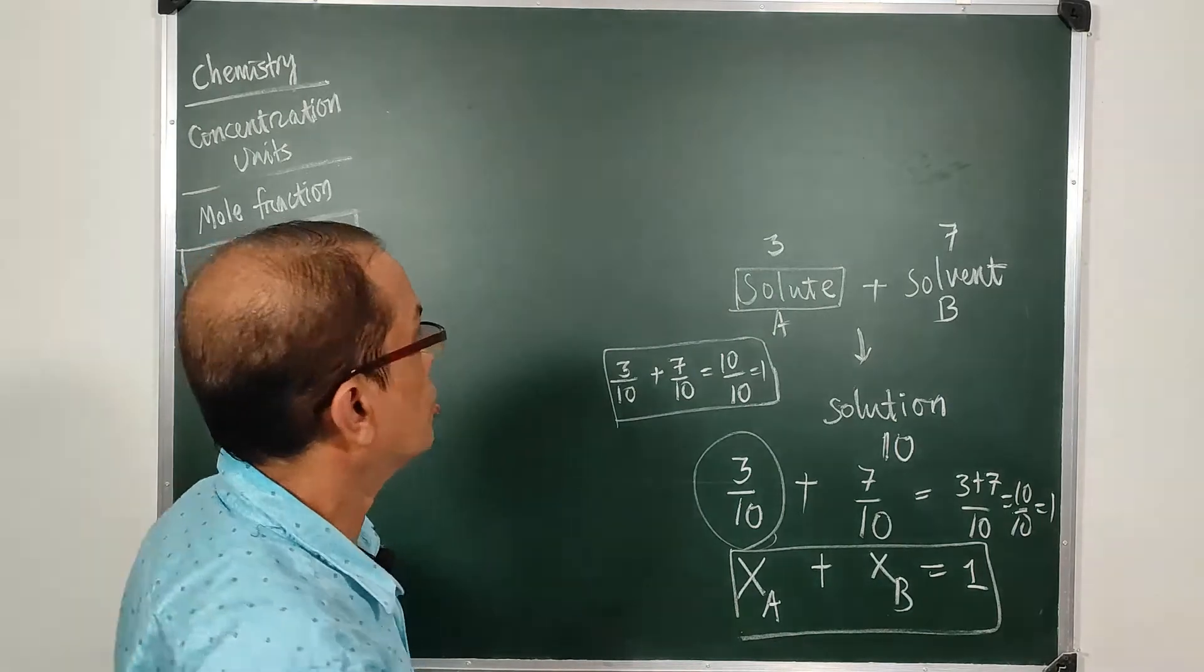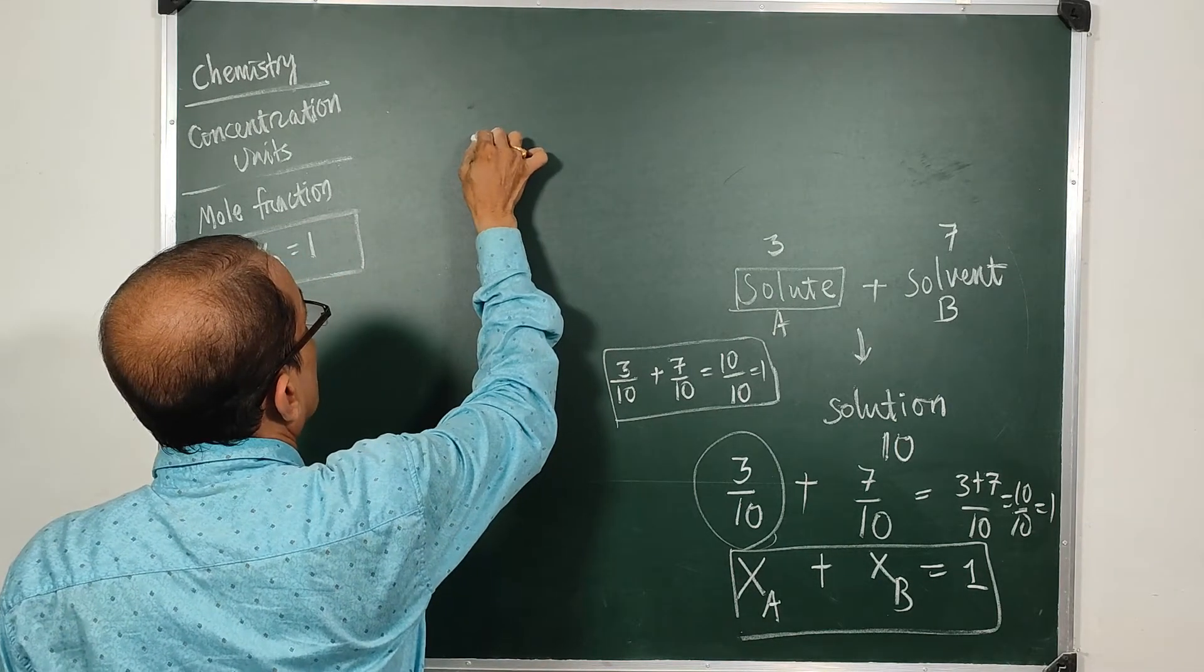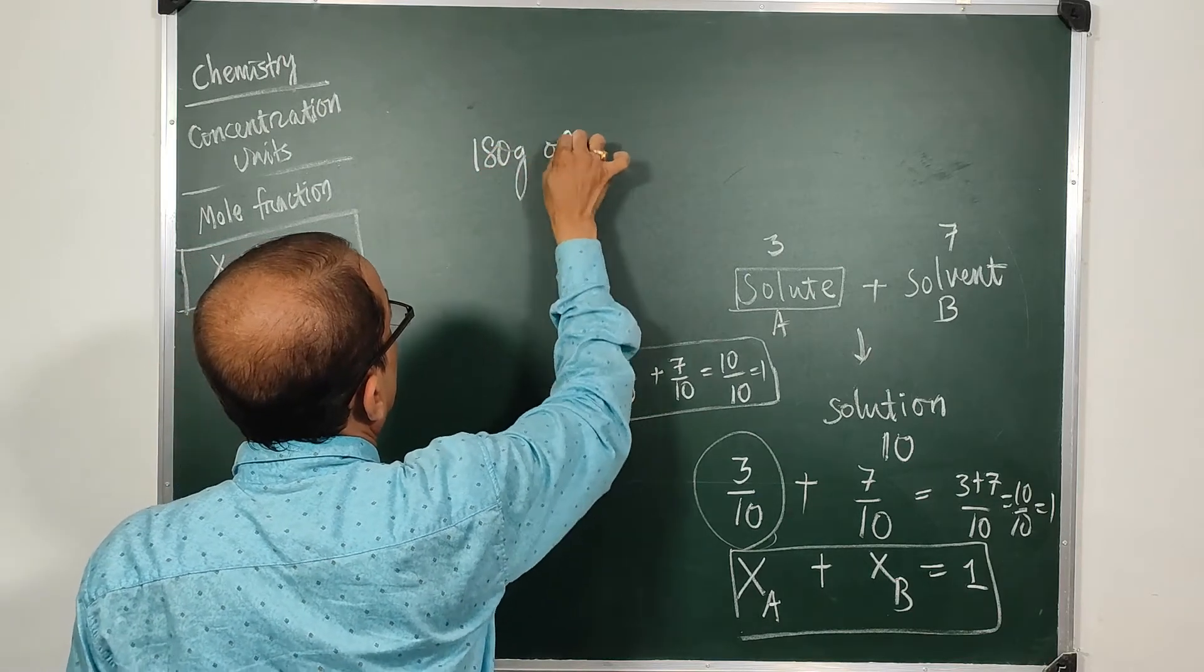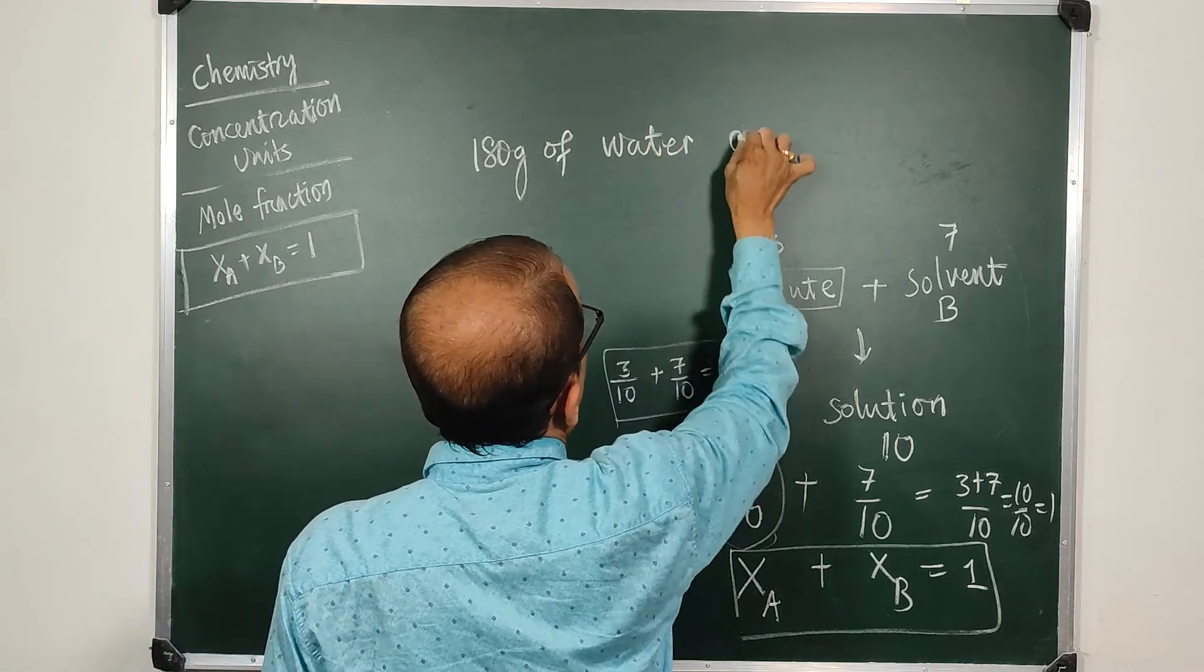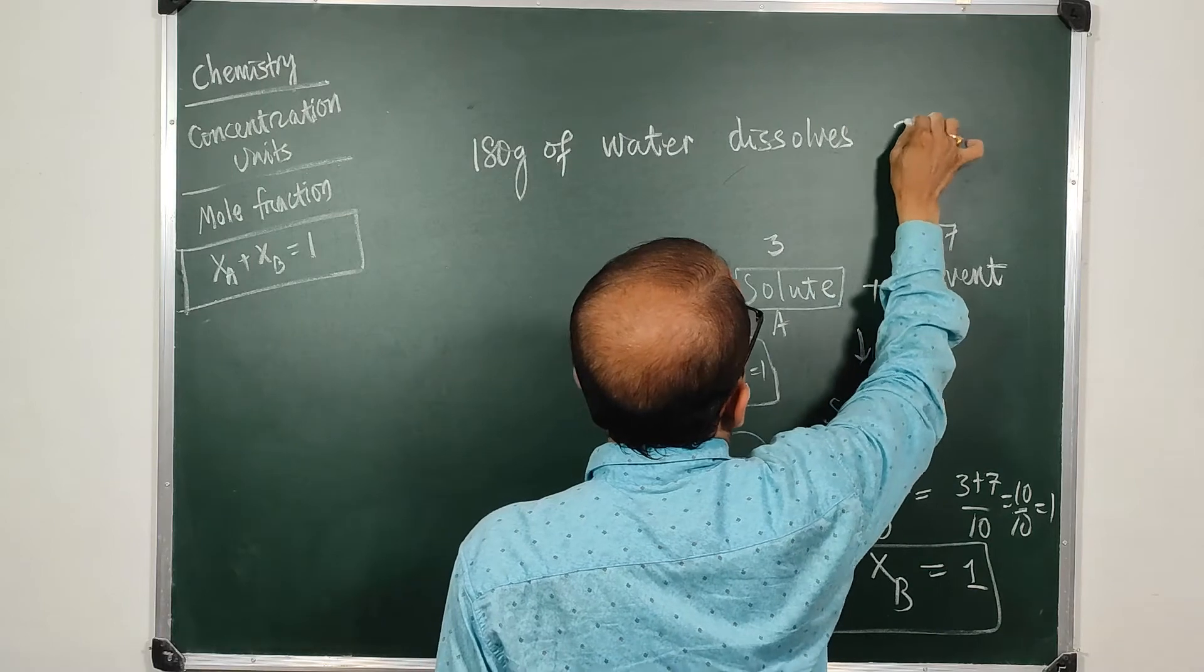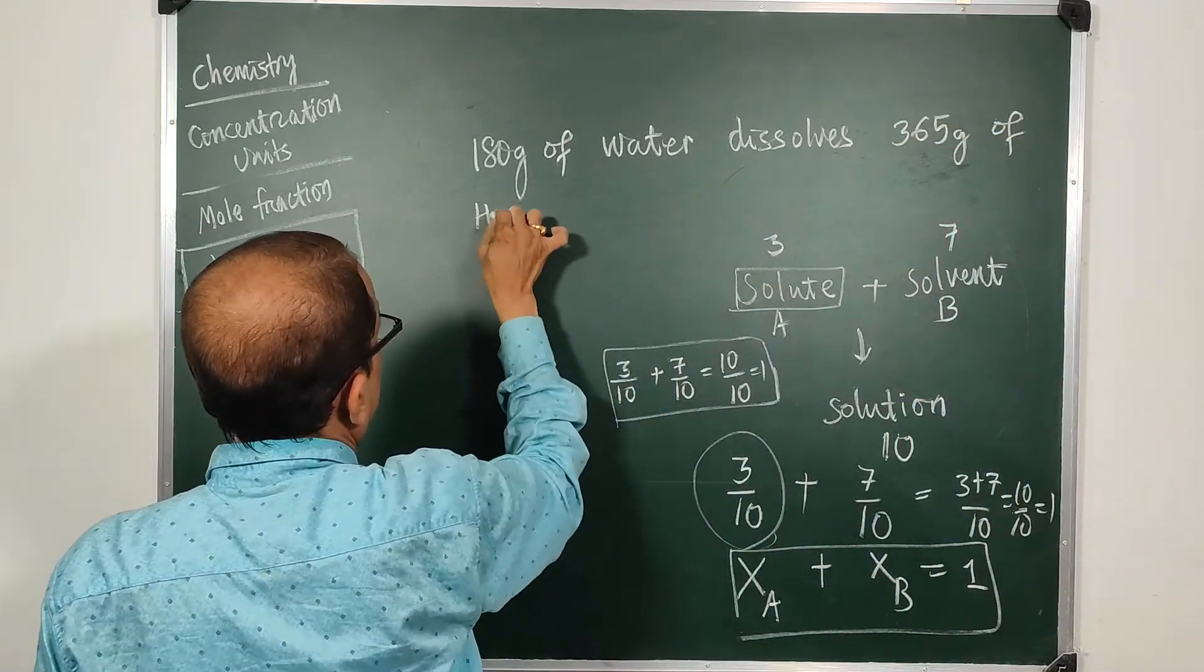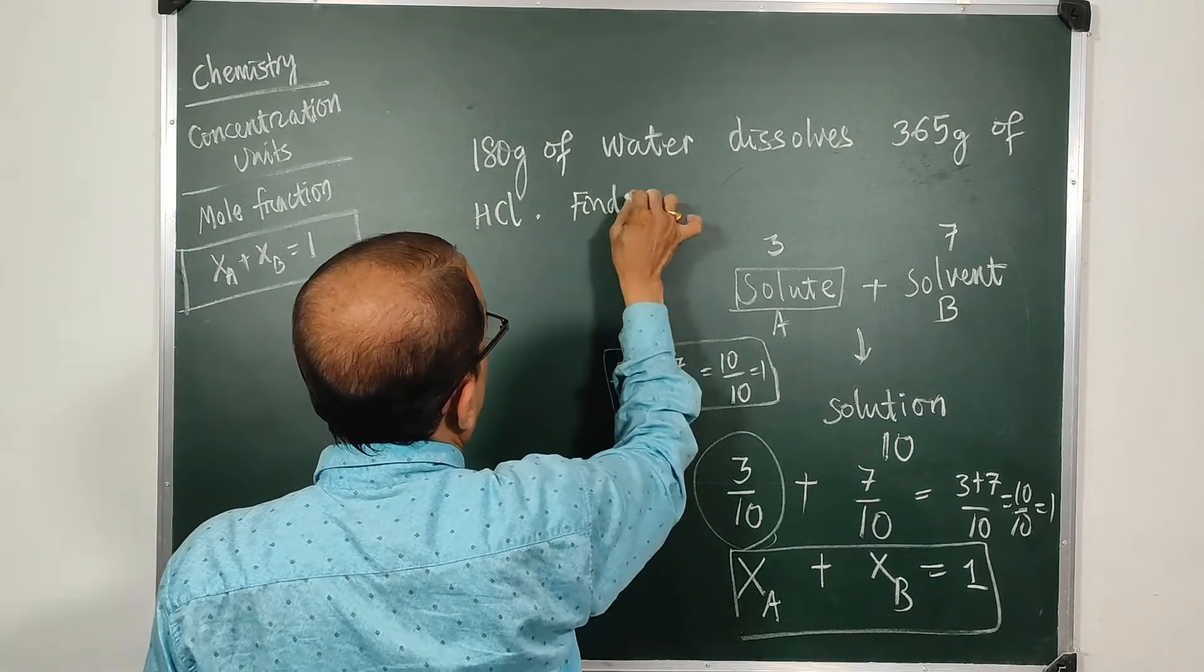So if you say suppose 180 grams of water dissolves 365 grams of hydrochloric acid, find the mole fractions.